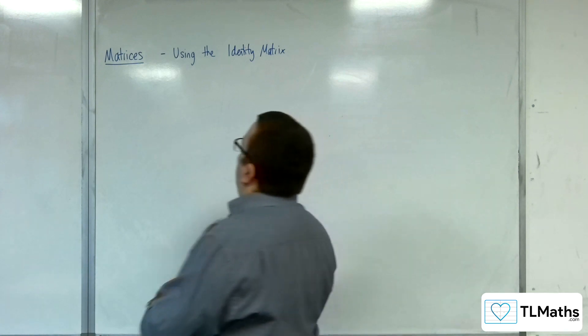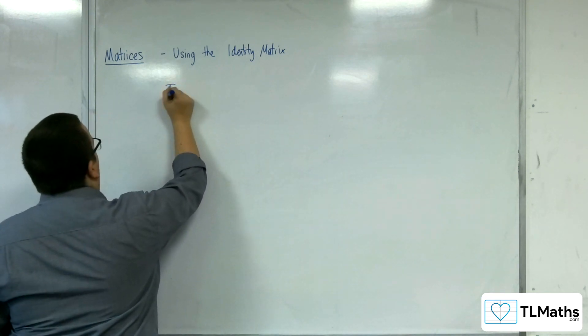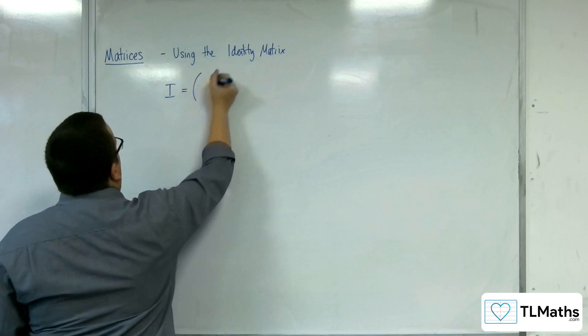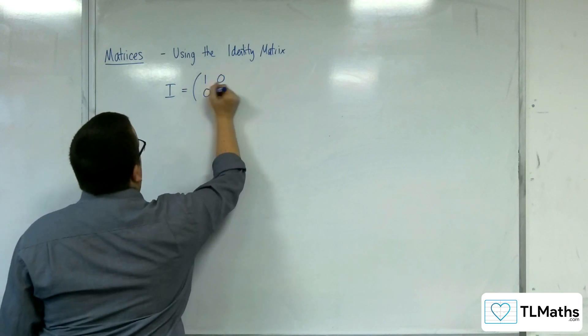So the idea is that the identity matrix, as I've already introduced in a previous video, for a 2x2 matrix would be 1, 0, 0, 1.